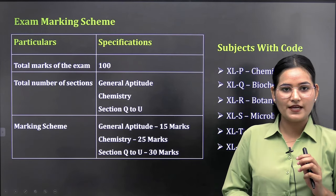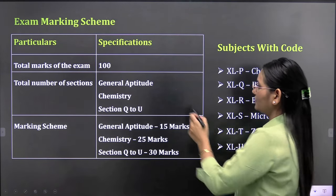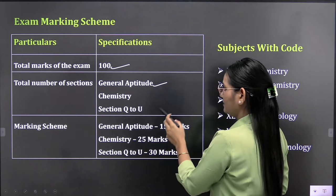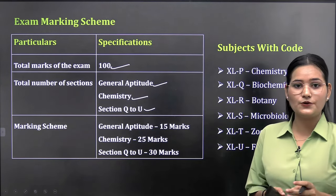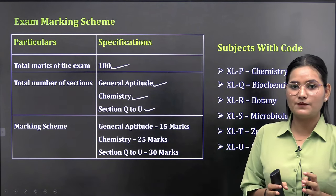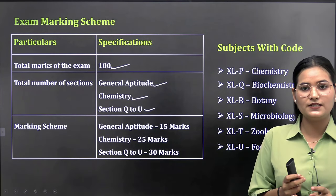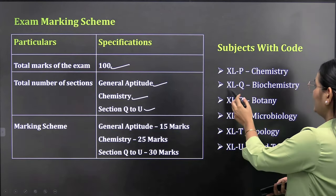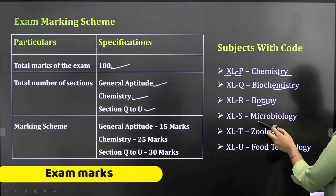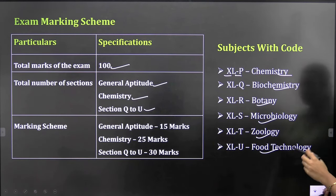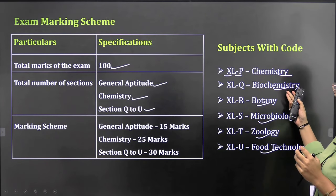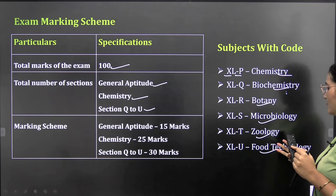Now coming to exam marking scheme. The total marks of the question paper is 100 marks and total number of sections is three. First is general aptitude, second is chemistry, and third is the subjective section in which you have Q to U segments. XL means life science and P denotes chemistry. XL-Q for biochemistry, XL-R for botany, XL-S for microbiology, XL-T for zoology, and XL-U for food technology.